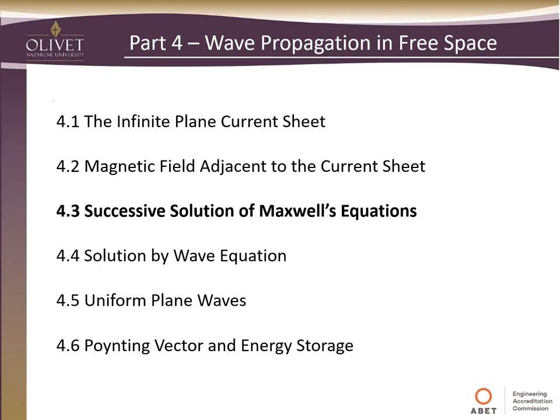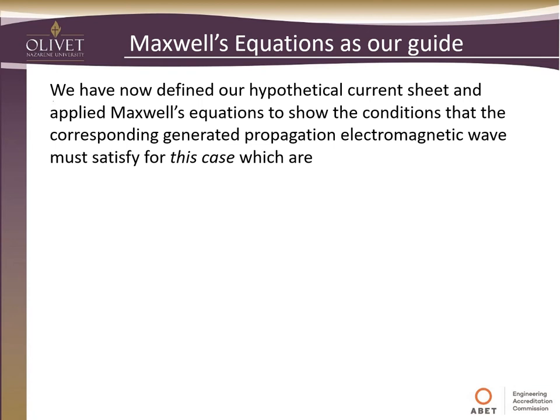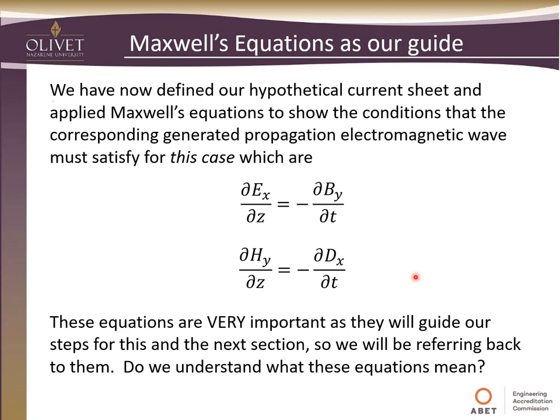Continuing Part 4, wave propagation in free space: we've done the infinite plane current and the magnetic field on each side. Now we're going to do the successive solution to Maxwell's equations. We've defined our current sheet and applied Maxwell's equations for the special case to look at this propagating electromagnetic wave. Here are the equations we've come up with — a very special case where we only have E in the X direction along the Z axis, corresponding to a magnetic field in the Y direction that varies with time. These equations are very important and will guide our steps.